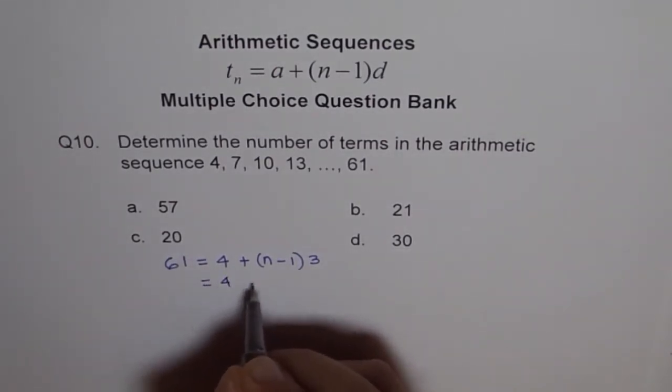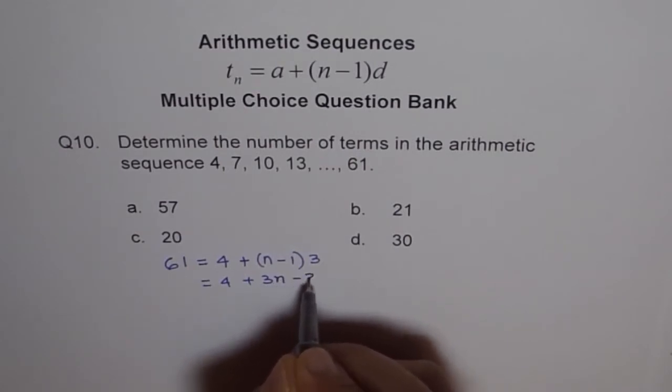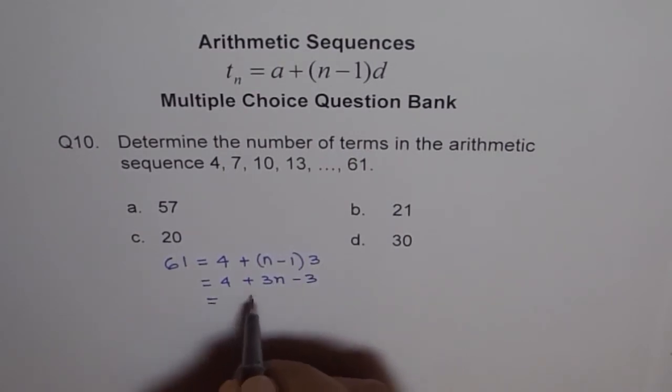So we get, goes to 4, 3n minus 3. Which is 4 minus 3 is 1, plus 3n.